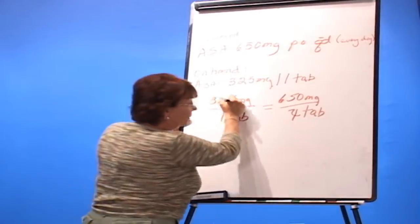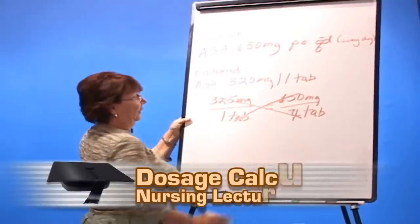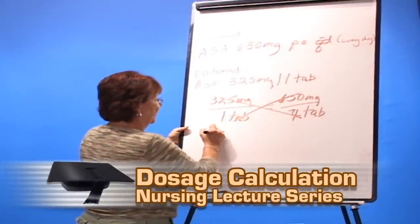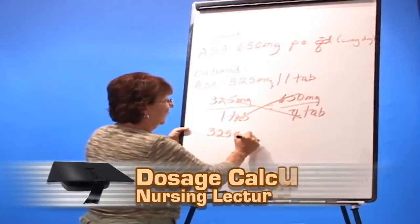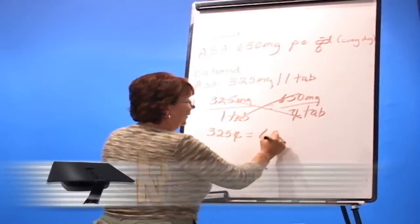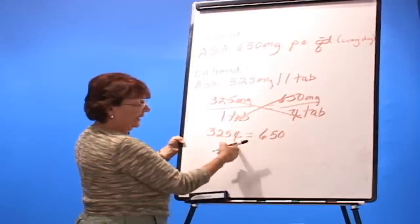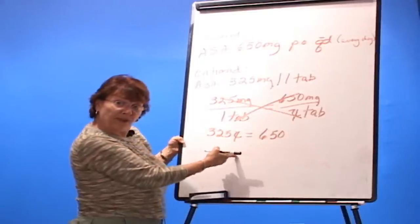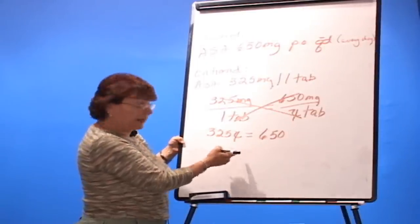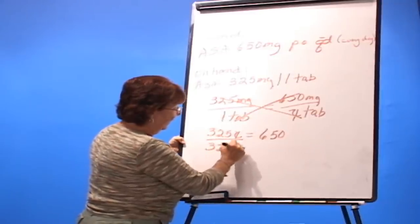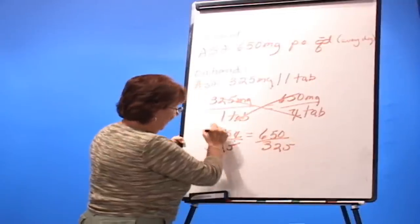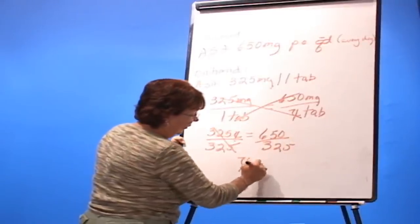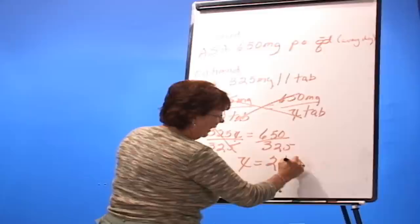Then I'm just going to cross multiply. So it's 325x equals 650, got to get x by itself. Same step we just did a few months ago, isn't it? And then x equals 2 tabs.